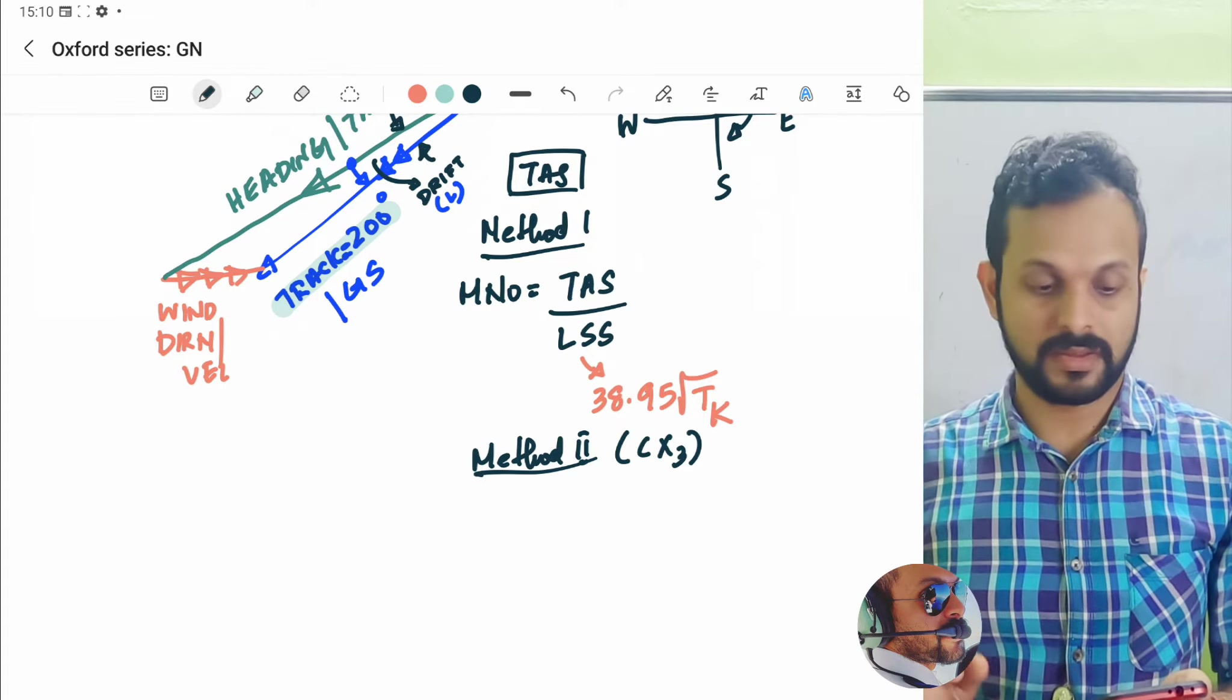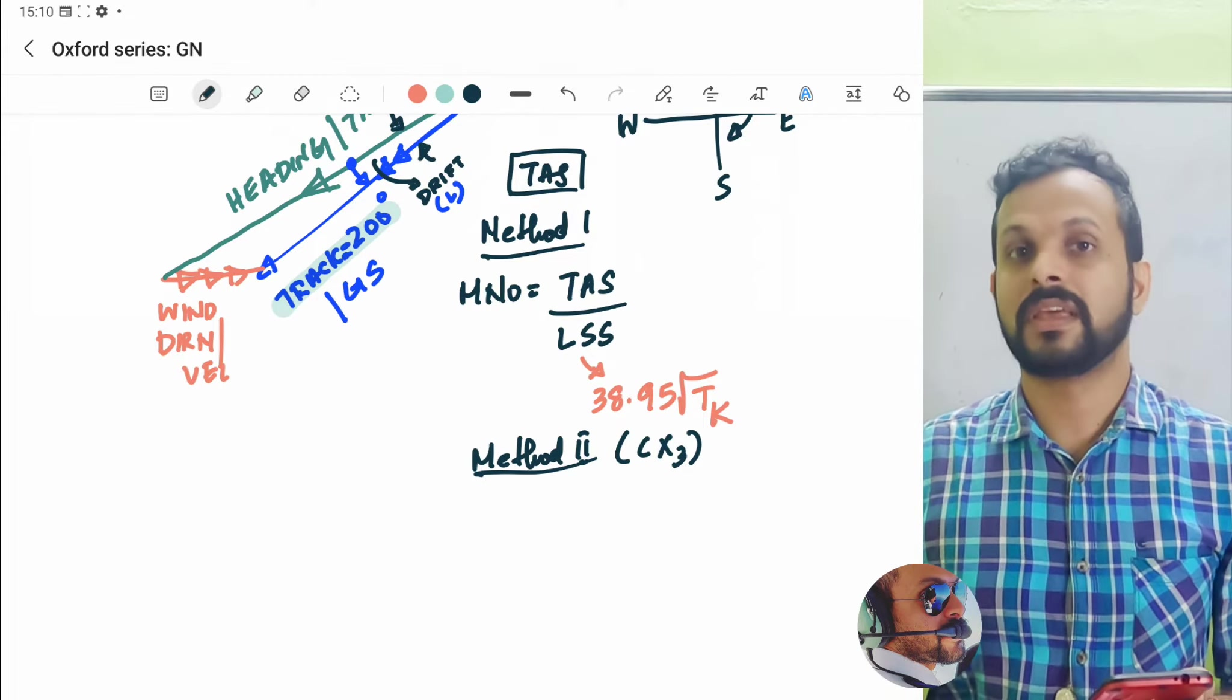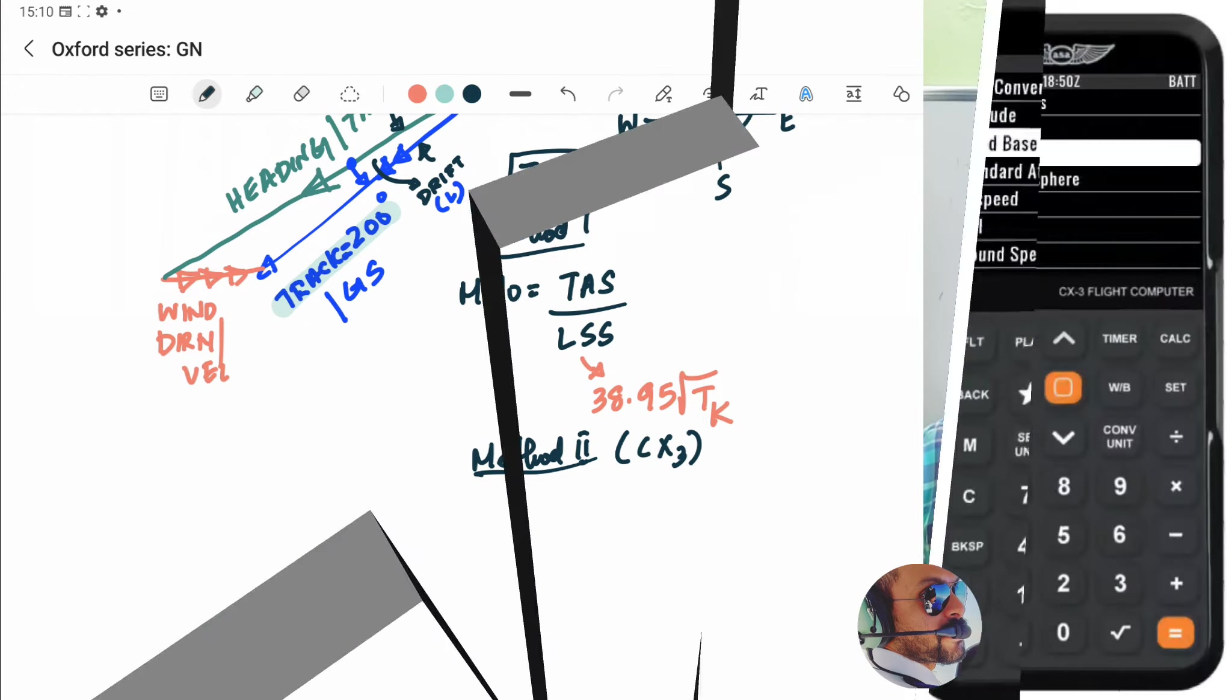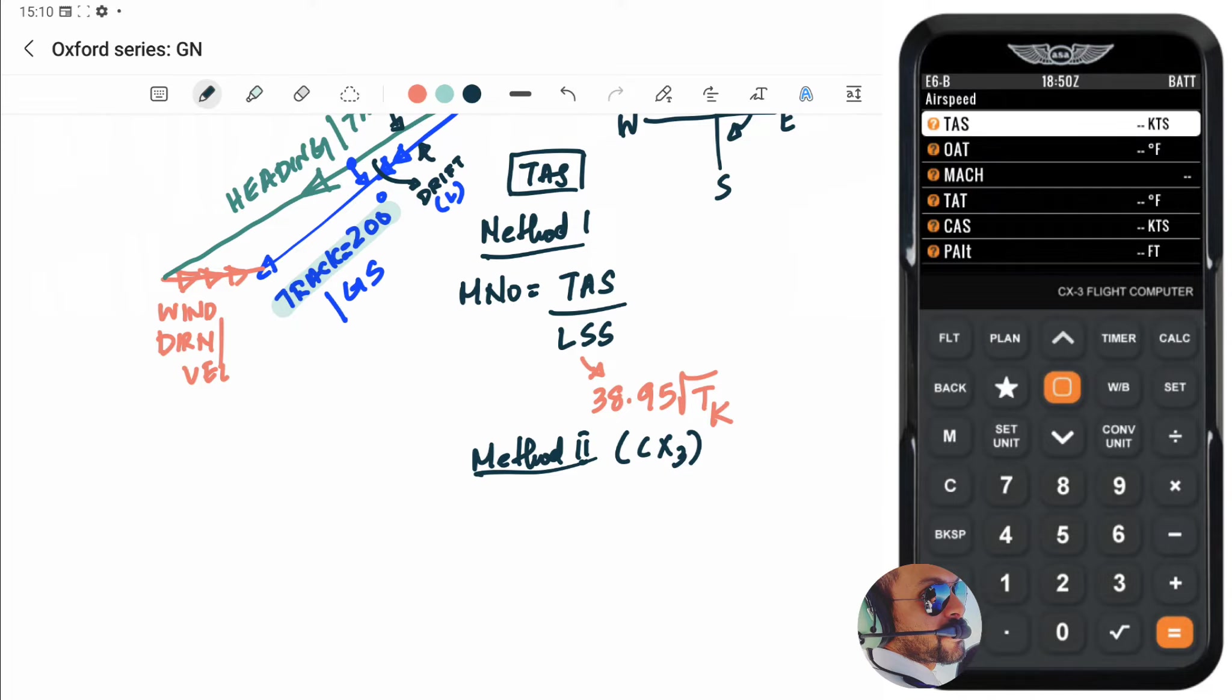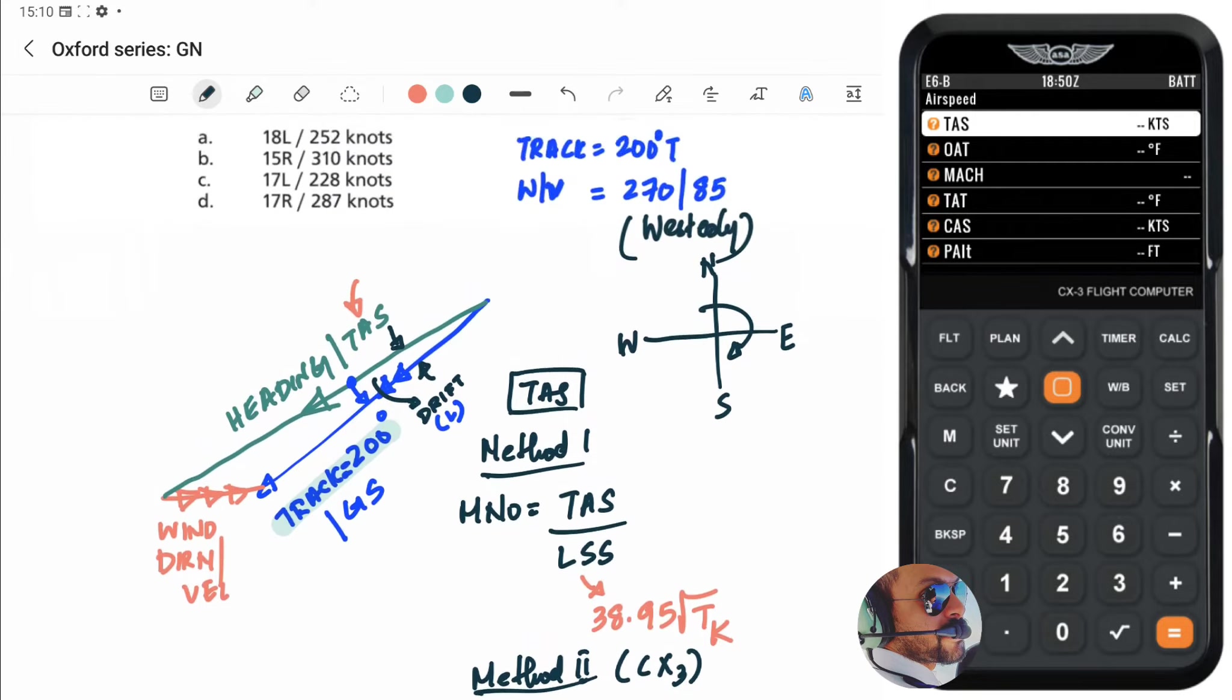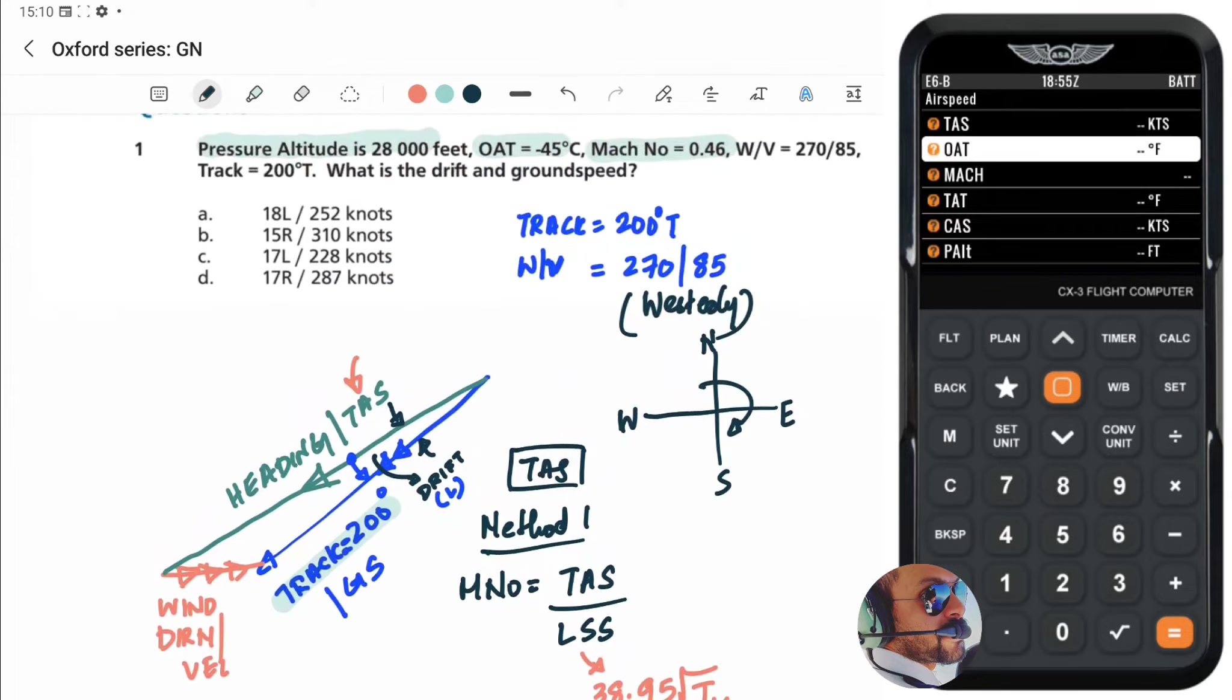So, grab your CX3 and first thing first, you have to find the true airspeed. So it is basically airspeed. So you have to go to the airspeed tab. So let us navigate to the airspeed tab which is the fifth tab and there you have multiple options for TAS, outside temperature, Mach number and so on and so forth.